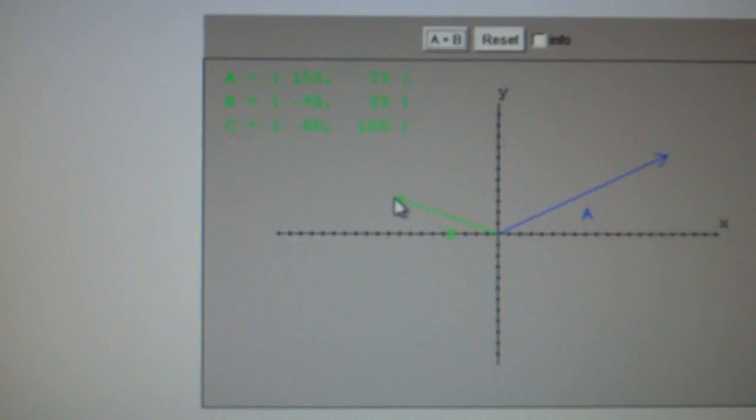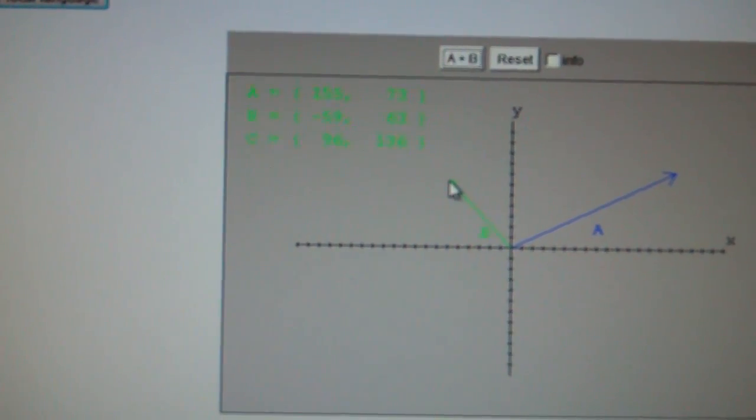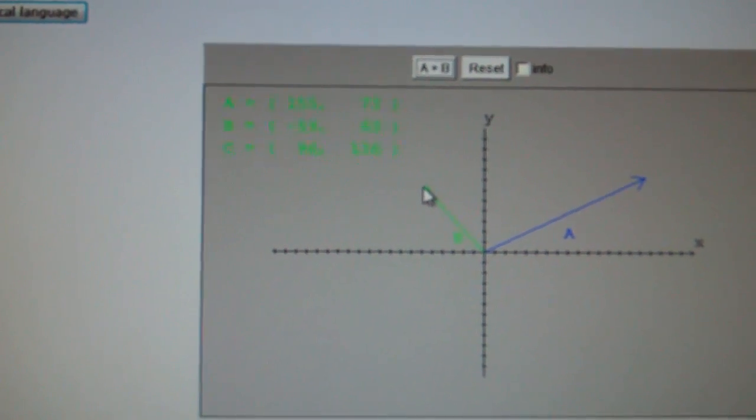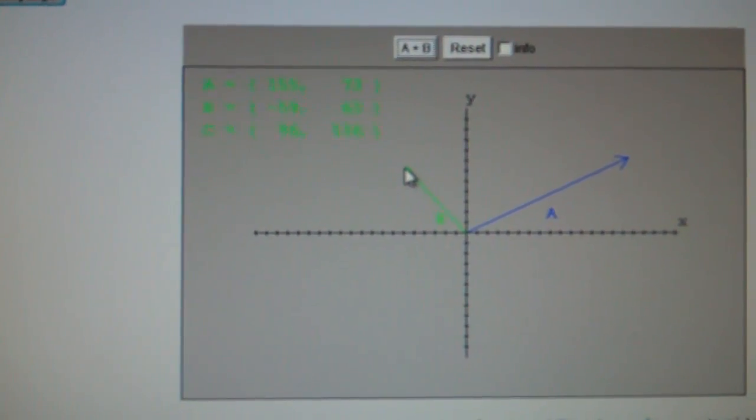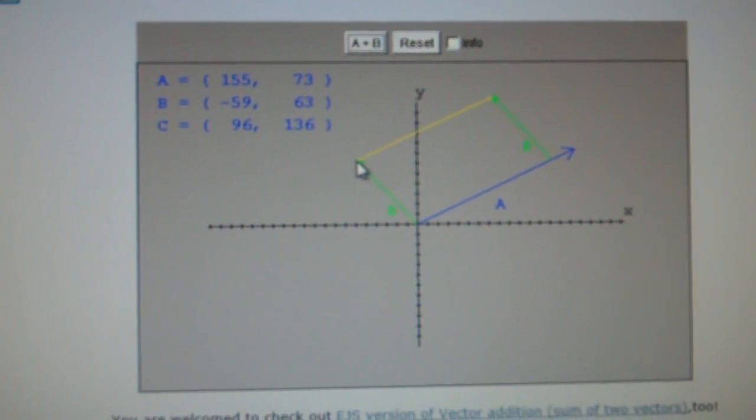Now let's say we figure out that the B vector, and this is kind of hard to see with the green, but trust me, it's there, is right there, and it's minus 59.63. So we click there. Now what happens is, you see that? It's drawing it for you.